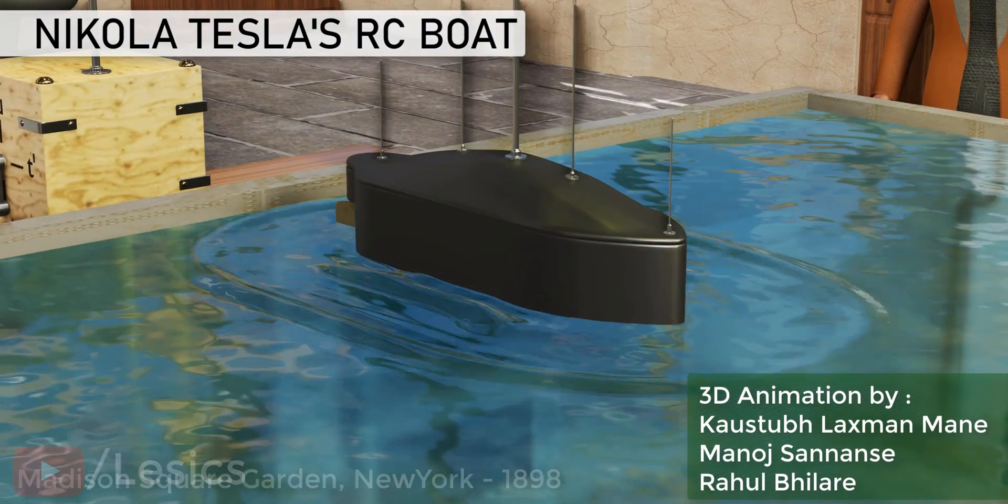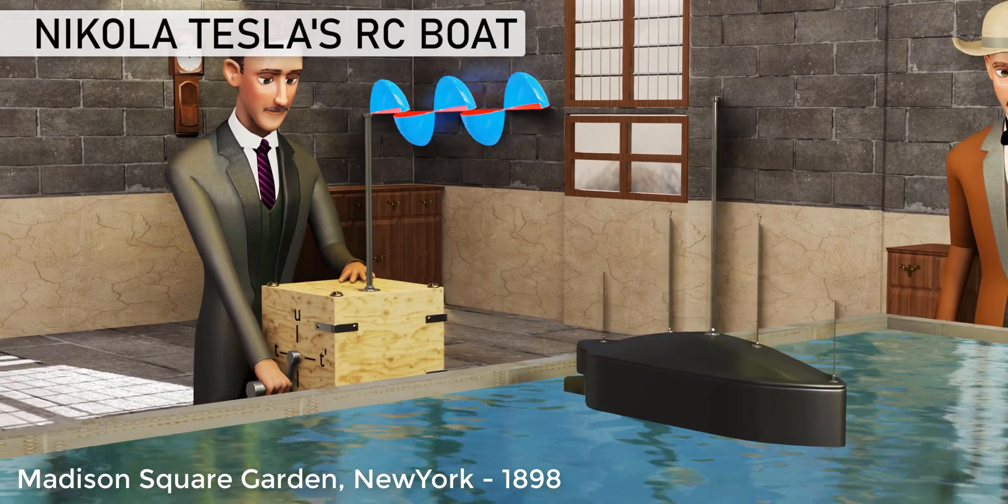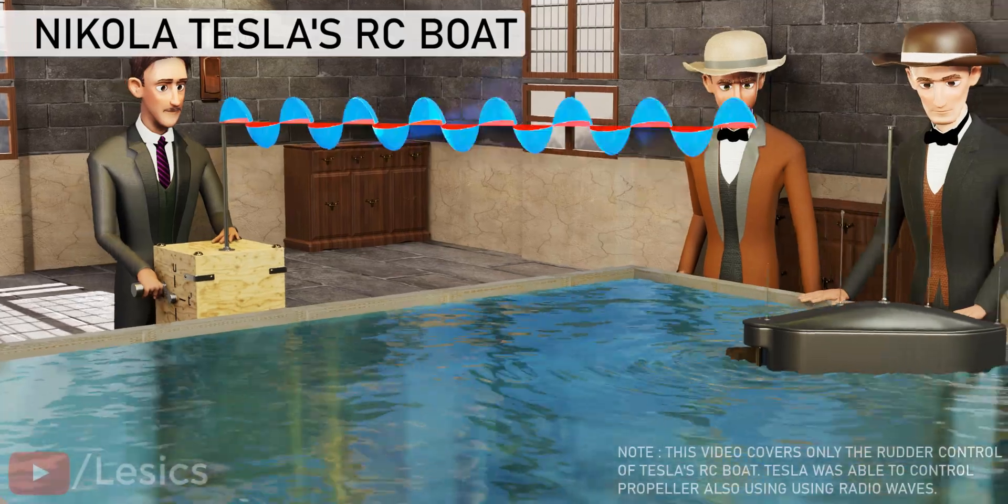In the 19th century, Nikola Tesla demonstrated wireless control technology for devices for the very first time. He controlled a toy boat using only radio waves.